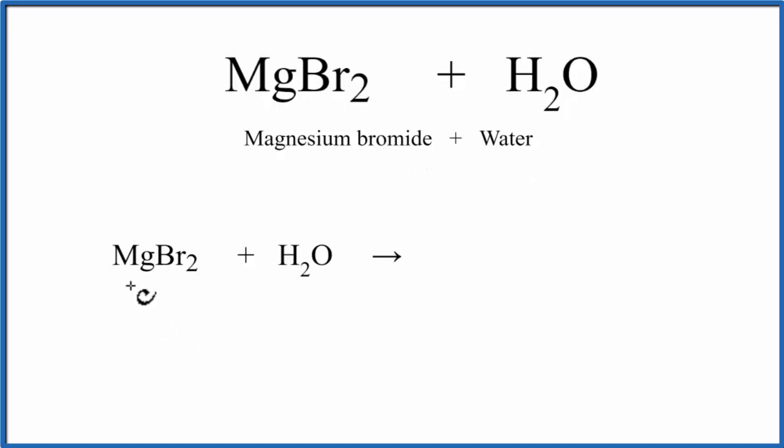So magnesium, that's a metal, and then bromine, that's a non-metal. When we have a metal and a non-metal, it's an ionic compound.